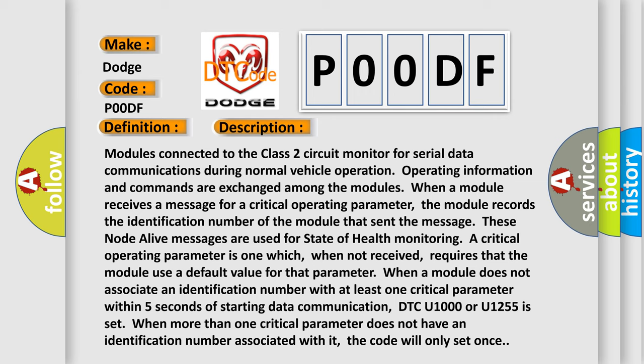A critical operating parameter is one which, when not received, requires that the module use a default value for that parameter. When a module does not associate an identification number with at least one critical parameter within five seconds of starting data communication, DTC U1000 or U1255 is set. When more than one critical parameter does not have an identification number associated with it, the code will only set once.